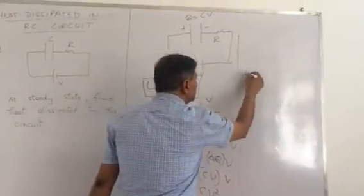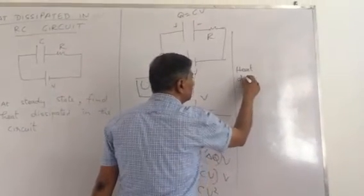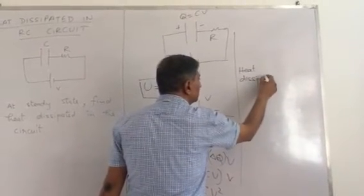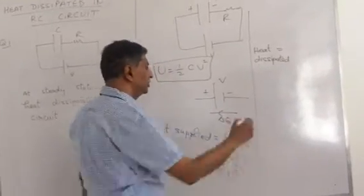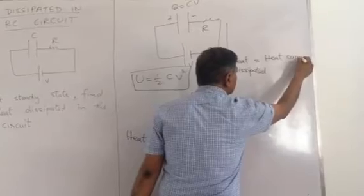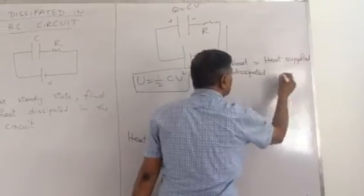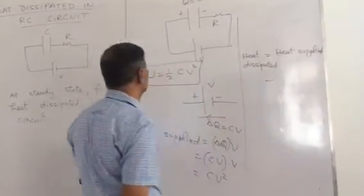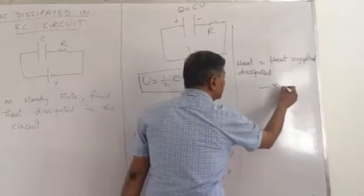Therefore, I will write heat dissipated as heat supplied by the battery minus energy stored in capacitor.